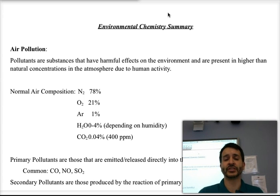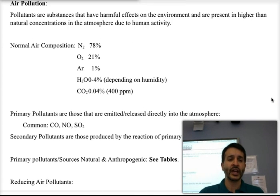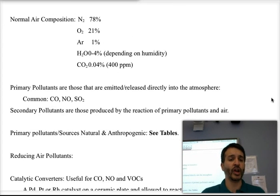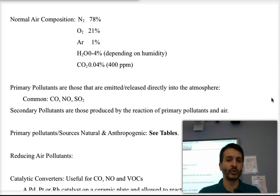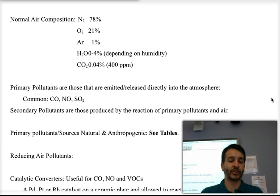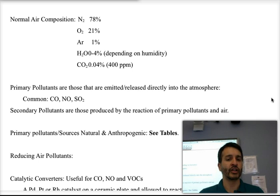Primary air pollutants are those that get emitted directly into the air — things like carbon monoxide, carbon dioxide, nitrogen oxide, and sulfur dioxide. Secondary pollutants are those that react normally with moisture or with more oxygen and nitrogen to make other pollutants. Examples of that are nitric acid, sulfur trioxide, sulfuric acid, and so on.